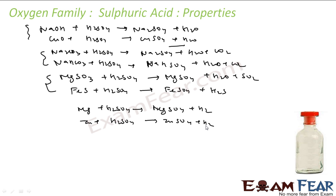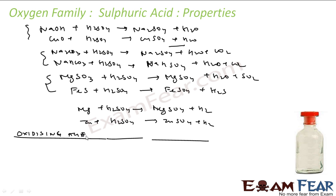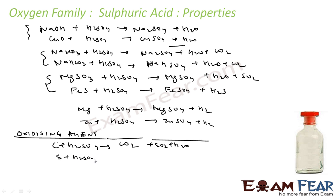Sulfuric acid acts as a very strong oxidizing agent. For example, carbon reacted with concentrated sulfuric acid gives CO₂ (carbon goes from 0 to +4 oxidation state), along with SO₂ and water. Sulfur itself, when reacted with concentrated sulfuric acid, forms SO₂ — sulfur also goes from 0 to +4 state.